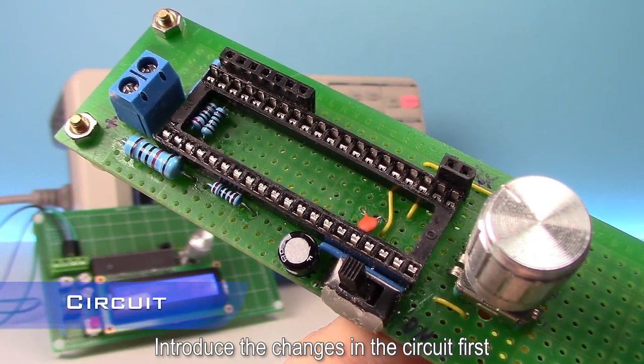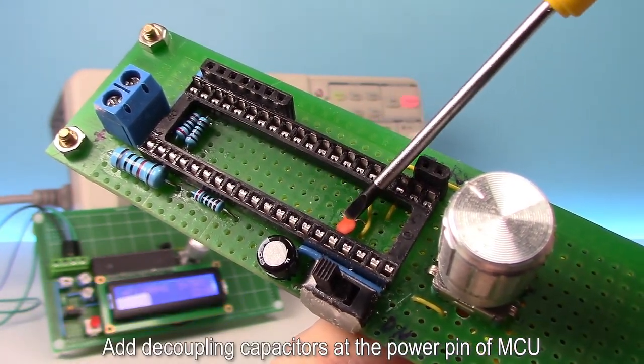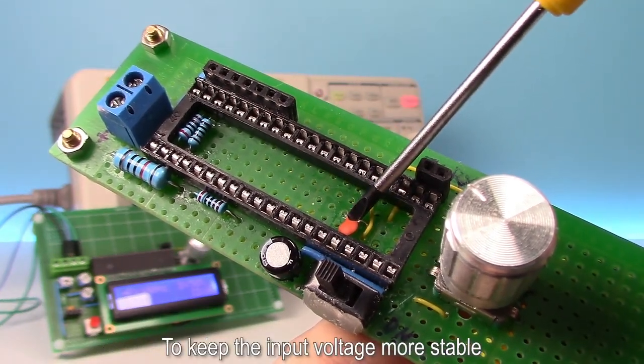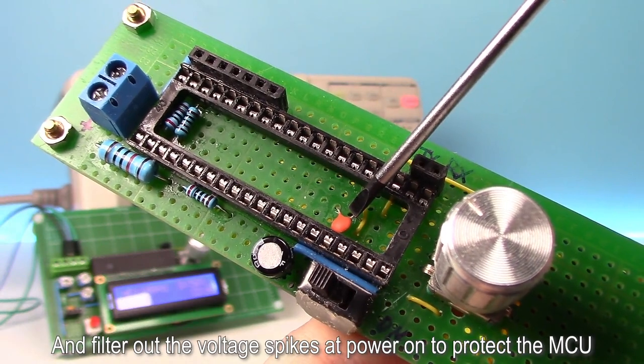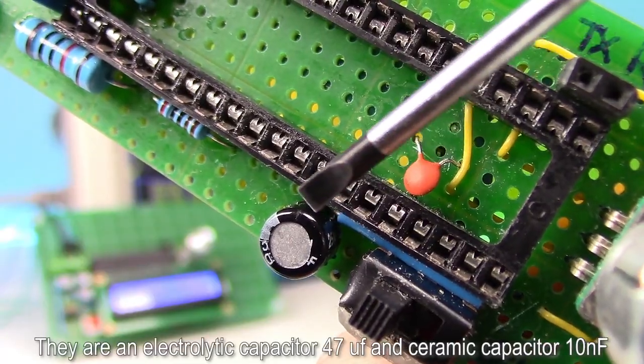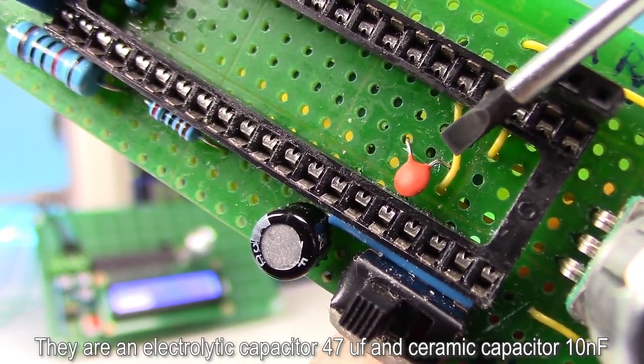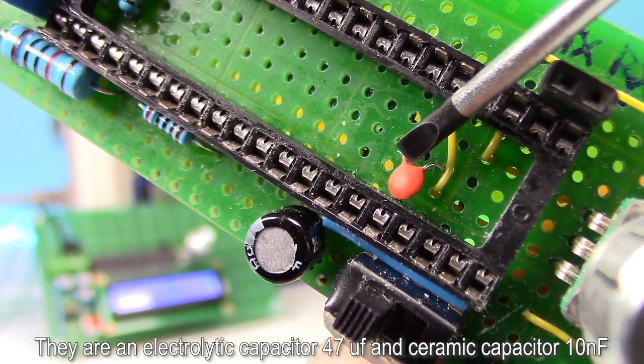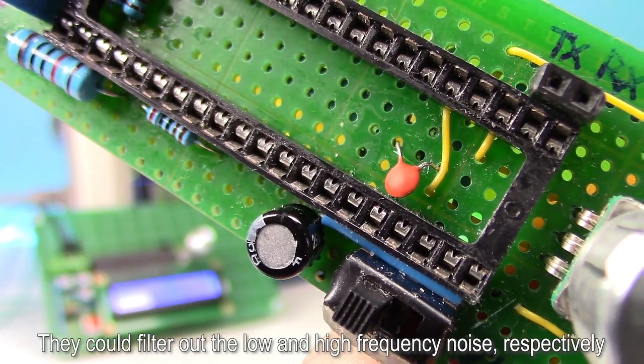Introduce the changes in the circuit first. Add decoupling capacitors at the power pin of MCU to keep the input voltage more stable, and filter out the voltage spikes at power on to protect the MCU. There are electrolytic capacitor 47 µF and ceramic capacitor 10 nF. They could filter out the low and high frequency noise respectively.